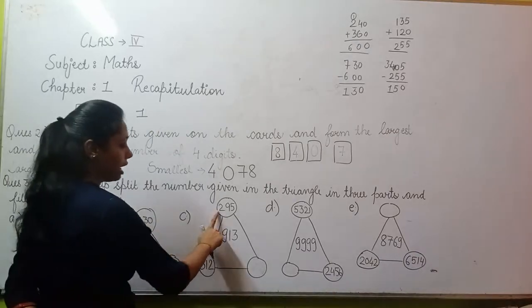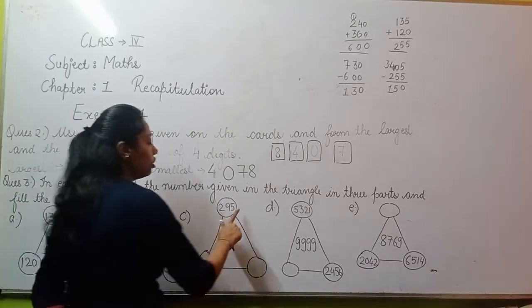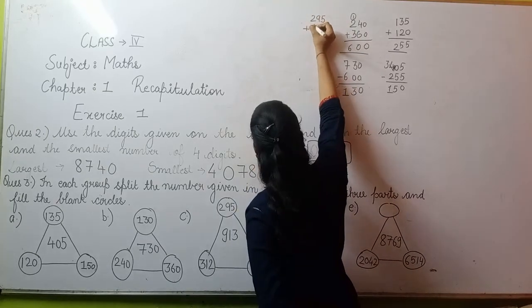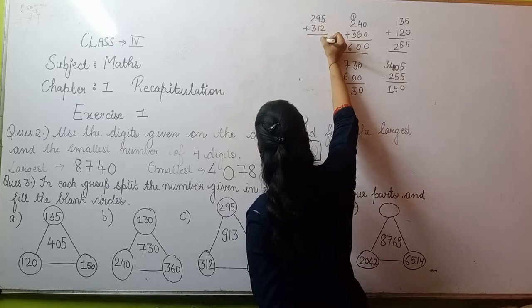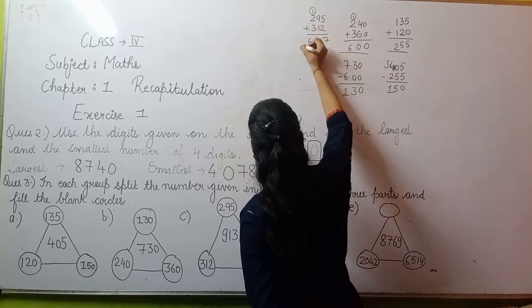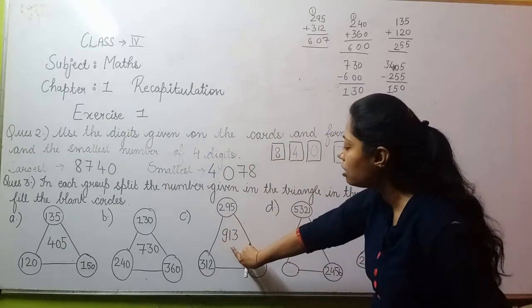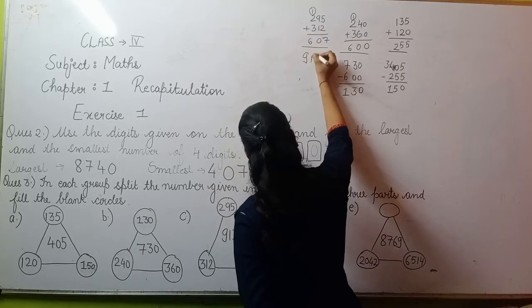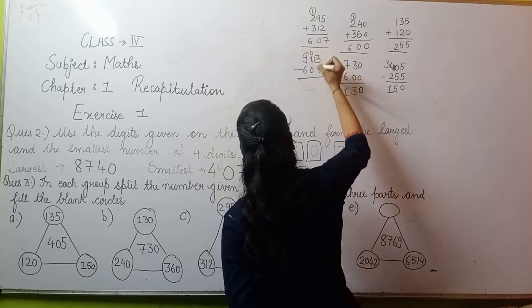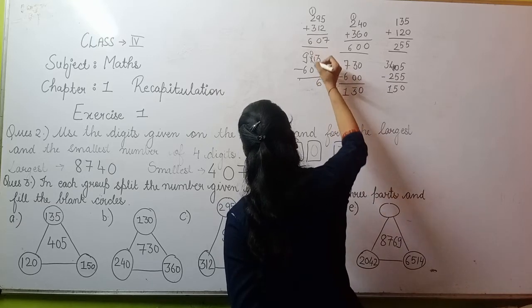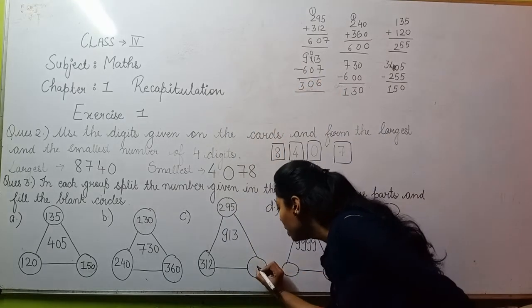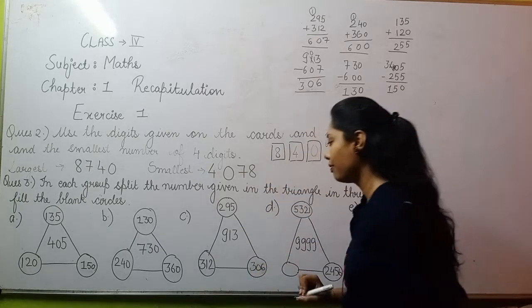Moving to part C, again two circles are given, and one circle you have to find. First add both circles' values. 295 plus 312: 5 plus 2 is 7, 9 plus 1 is 10, carry forward 1 and write 0, 2 plus 3 is 5 plus 1 is 6, giving 607. Now subtract this from the triangle value. 913 minus 607: 13 minus 7 is 6, 0 minus 0 is 0, 9 minus 6 is 3. So 306, this value is your answer for this circle.